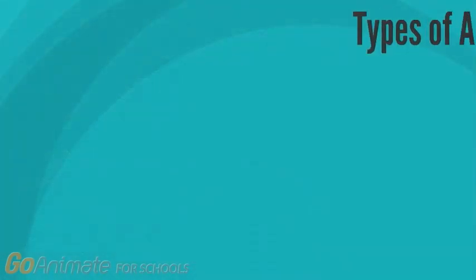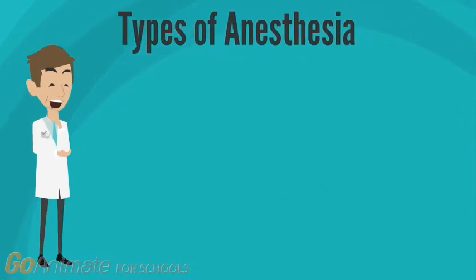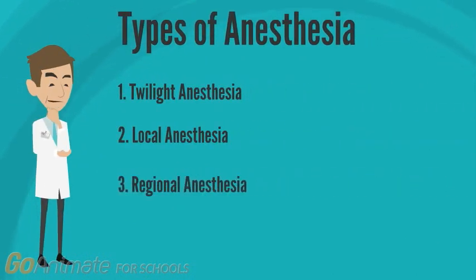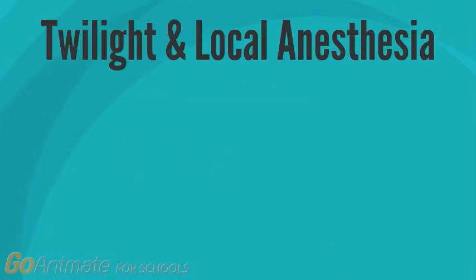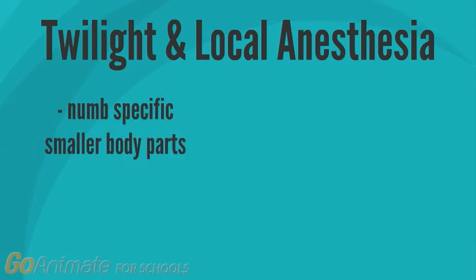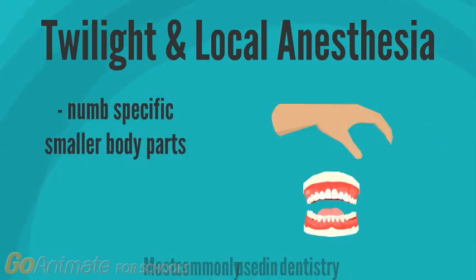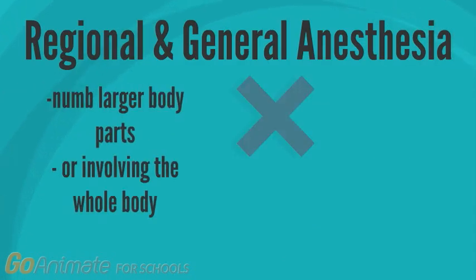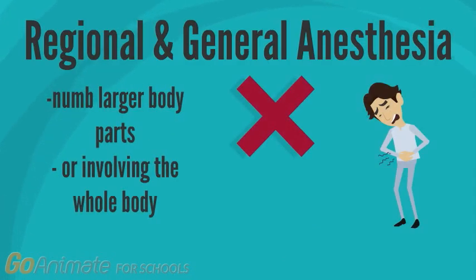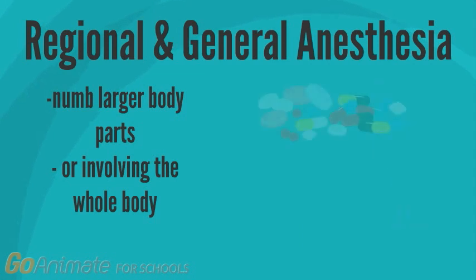So what are the different types of anesthesia? There are four common types of anesthesia: twilight, local, regional, and general, each with their own purpose and use. Twilight and local anesthesia numbs specific smaller body parts like the hand and wrist, and is most commonly found in dental surgery.